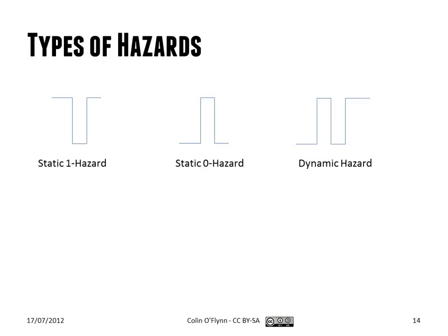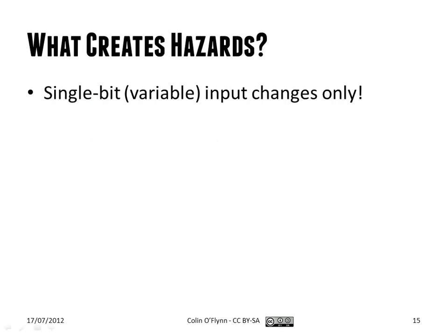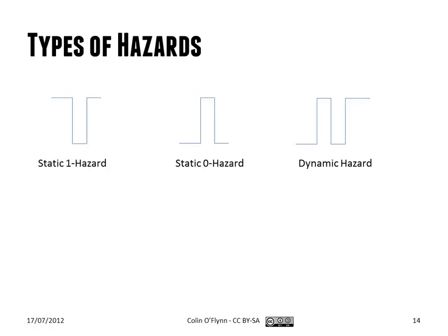So we call it a hazard because there's a potential for a glitch. We may have static 1 hazards where the circuit is supposed to be 1, glitches to 0. Static 0 hazards where it's supposed to be 0, glitches to 1. And dynamic hazards where it changes a few times. We only consider a single bit input change. We don't consider multiple bits changing to create a hazard.